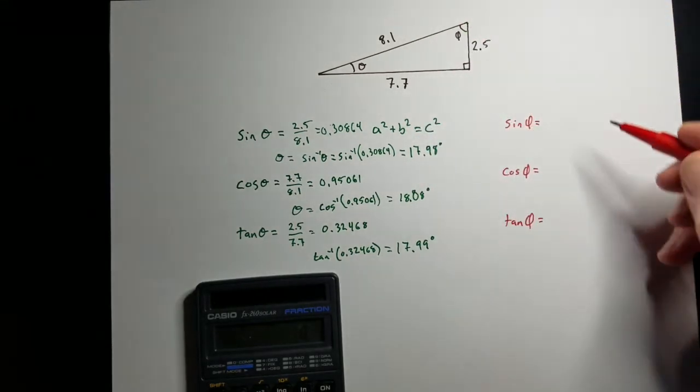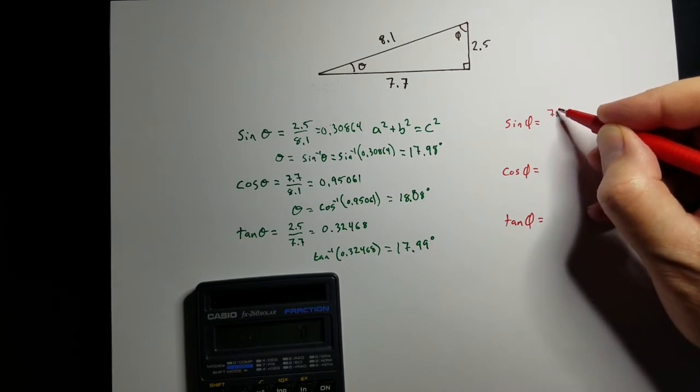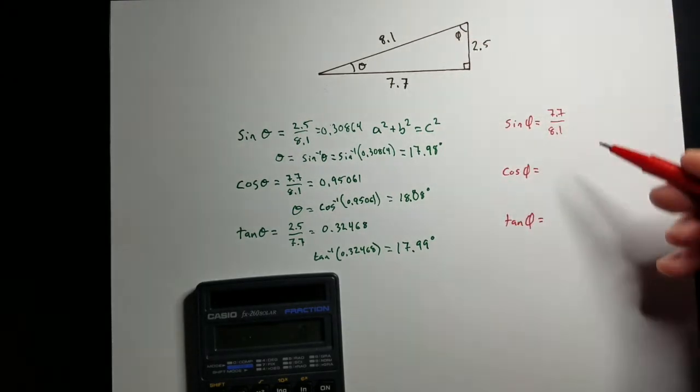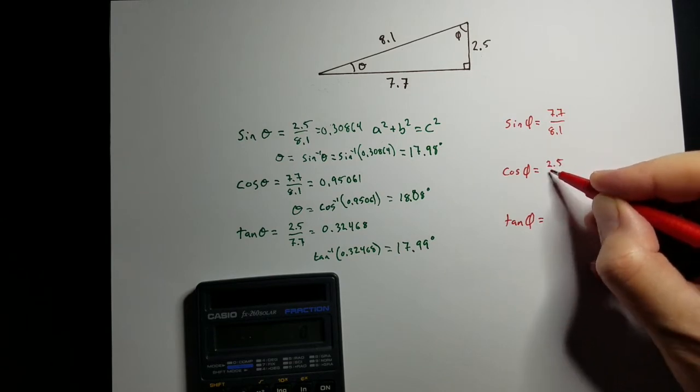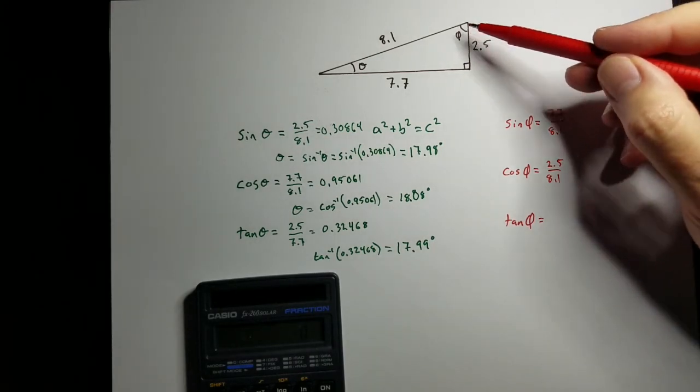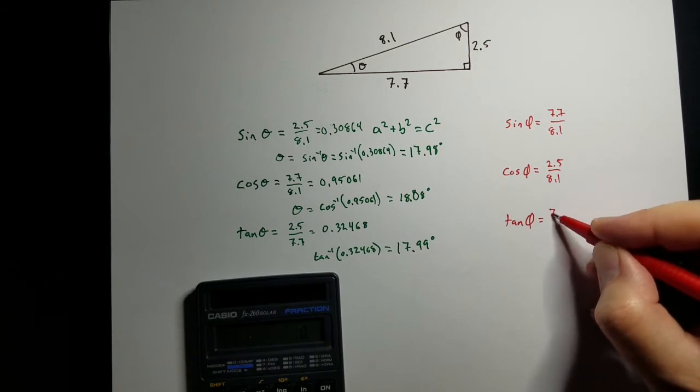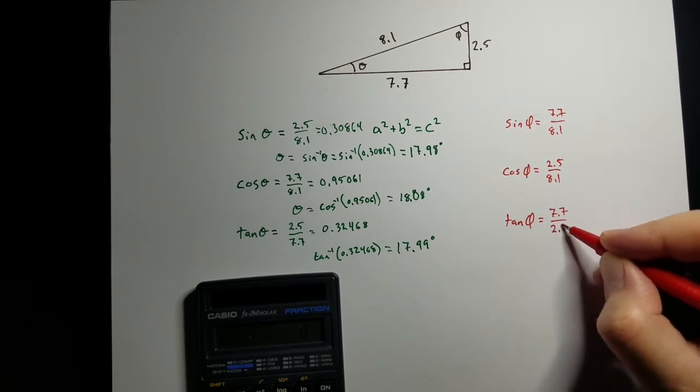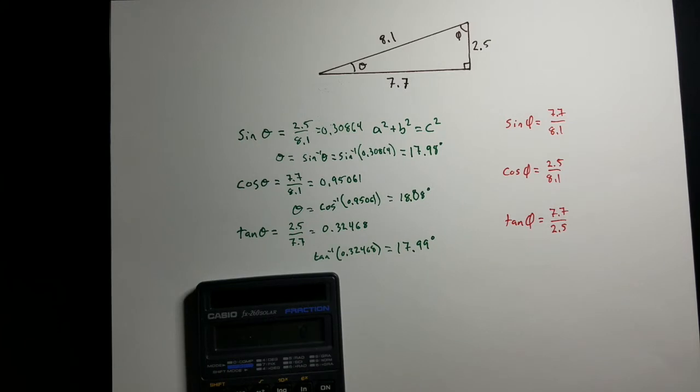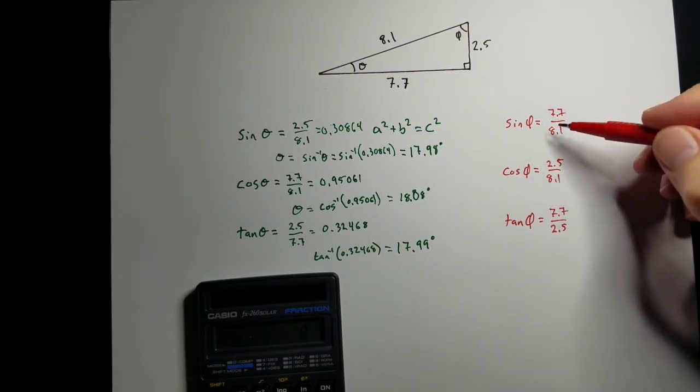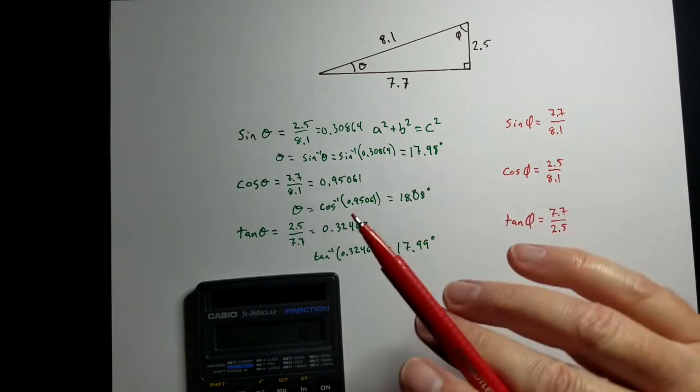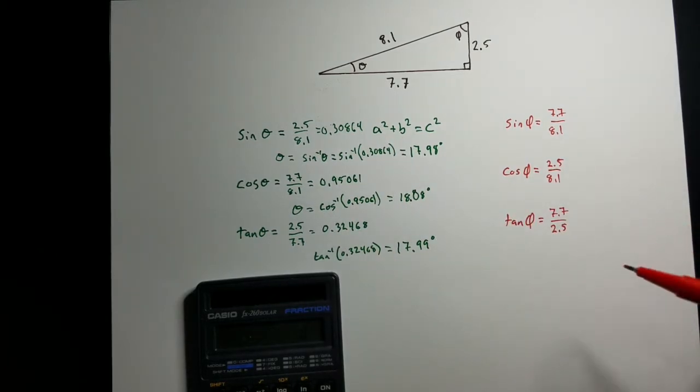For sine, it's opposite over hypotenuse. So the opposite side would be 7.7, and the hypotenuse is 8.1. For cosine, it's adjacent over hypotenuse, so that's 2.5 over 8.1. And for tangent, it's opposite over adjacent, so that's 7.7 over 2.5. Tangent is the only one that can have a number outside of between negative 1 and 1. If you've got sine and cosine, when you do that fraction, it's always going to be from negative 1 to 1. If you get anything outside that range, you did something horribly wrong. But for tangent, it can be just about anything.